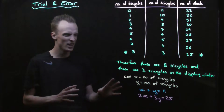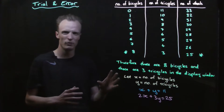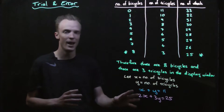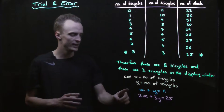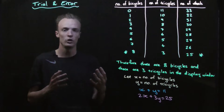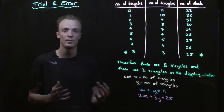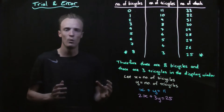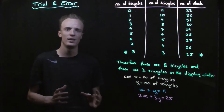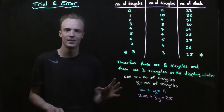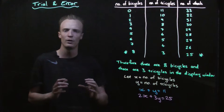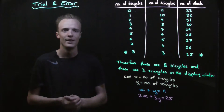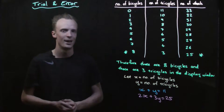So now I've represented our original problem as a set of two equations, which we call simultaneous equations. What I'm going to do next is find what's known as the graphical solution. Let's go and do that.